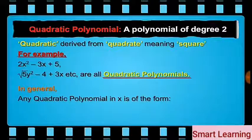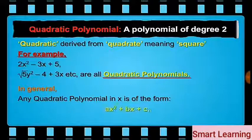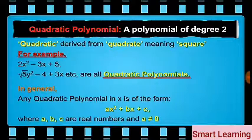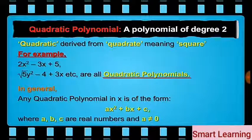In general, any quadratic polynomial in x is of the form ax squared plus bx plus c, where a, b, c are real numbers and a is not equal to 0.